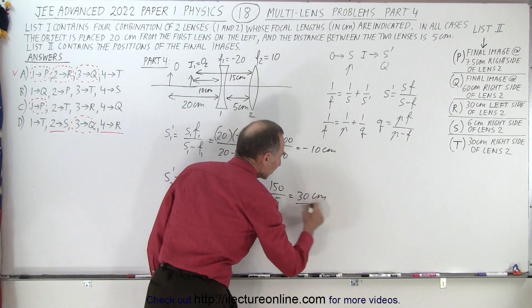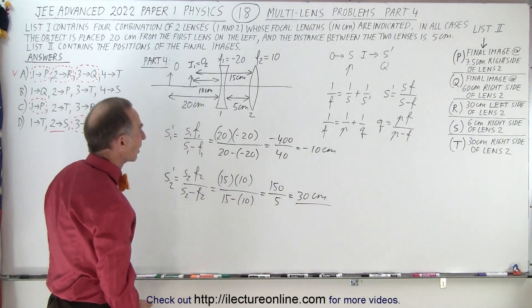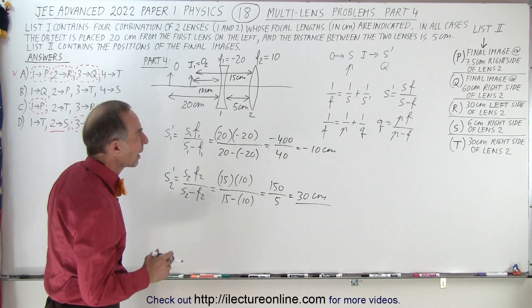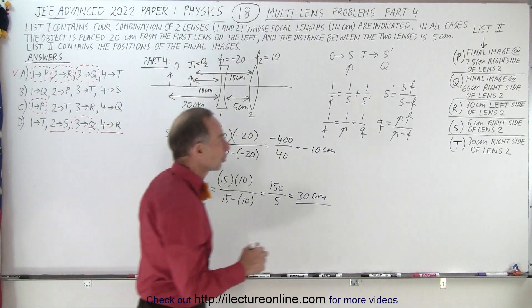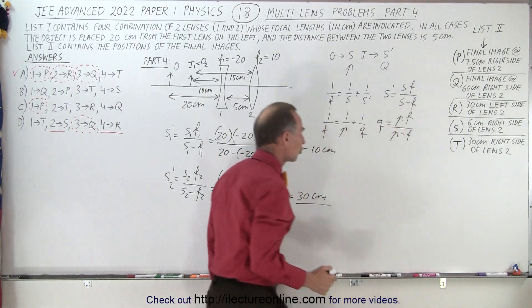And notice it's a positive 30 centimeters, which means it's to the right of the second lens. So we have an answer right here, 30 centimeters to the right of lens two.